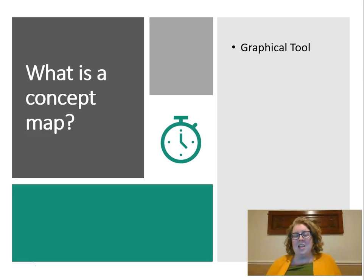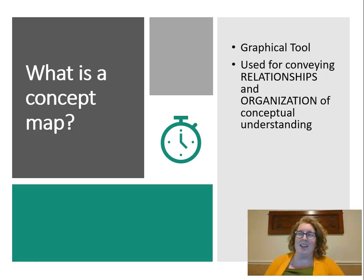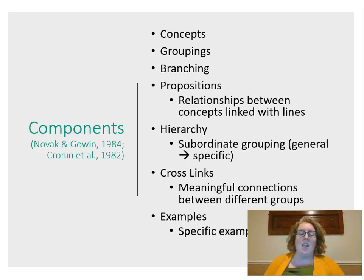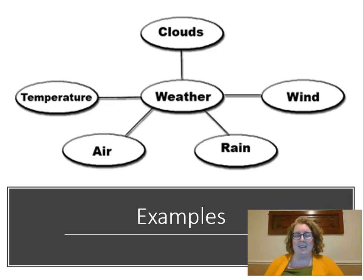A concept map is a graphical tool used to compare relationships in the organization of conceptual understanding. It helps us know not only what a student knows about a concept, but also how they organize that understanding. Students can use symbols, words, visual representations, and relational words. The components include: concepts, groupings, branching, propositions (linking words that describe relationships), hierarchy (how many levels exist), and cross-links (how different groups connect to each other).